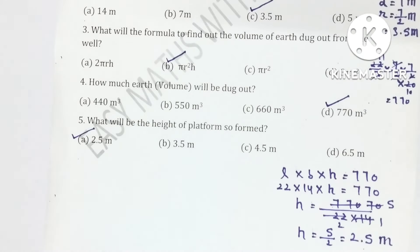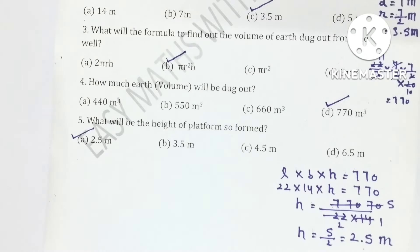From here, several more questions could be formed. For example: the platform formed will be of which shape? Among the options, you would tick cuboidal. Another possible question: what will be the volume of earth which is to be spread out to make the cuboidal platform?